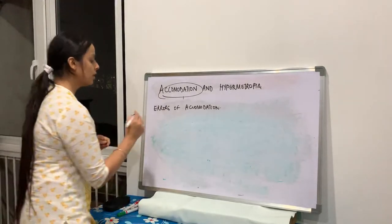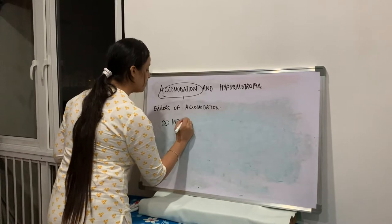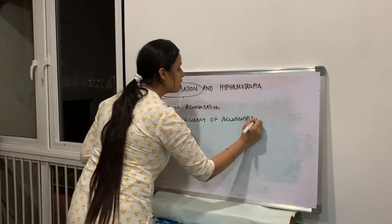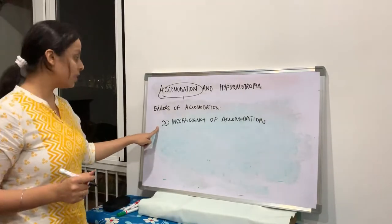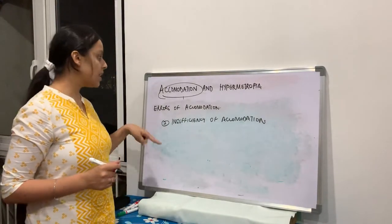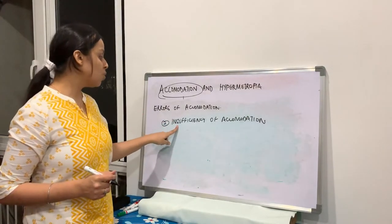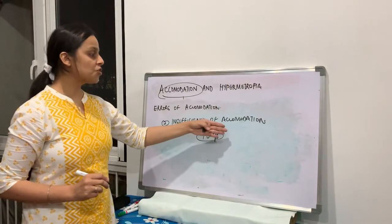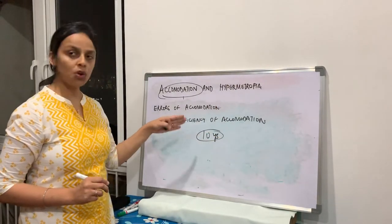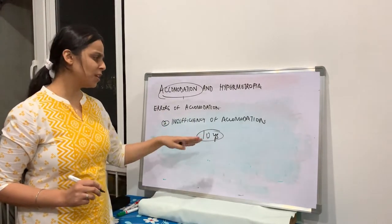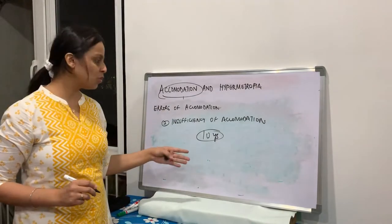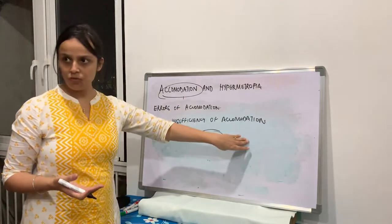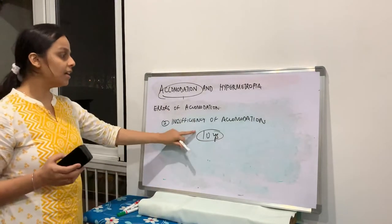The second error is insufficiency of accommodation. Do not confuse it with presbyopia — presbyopia is age-related and physiological. Insufficiency of accommodation is not compliant with age and can occur even in a 10-year-old. It may be due to a debilitating disease, certain drugs, or problems in the brain such as third nerve palsy or internal ophthalmoplegia.